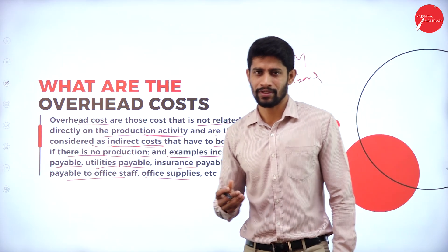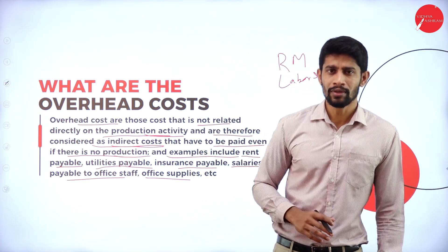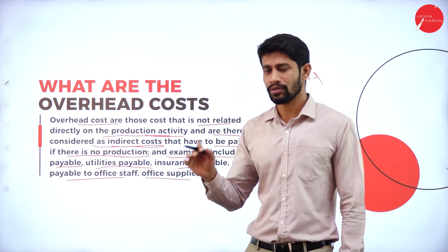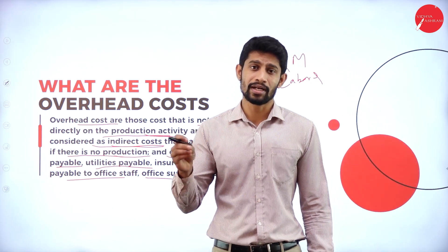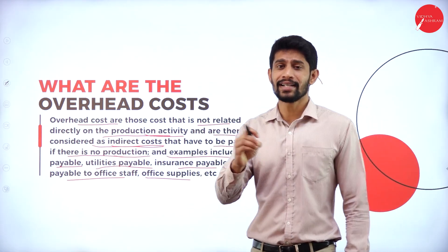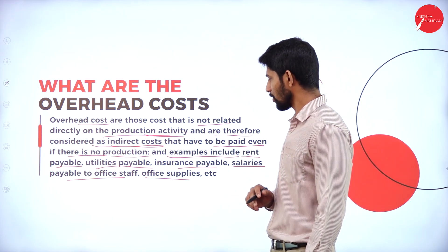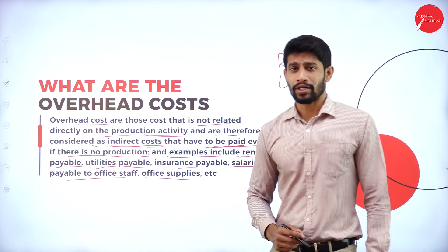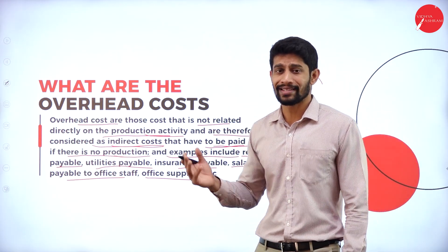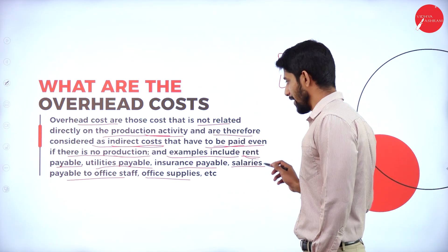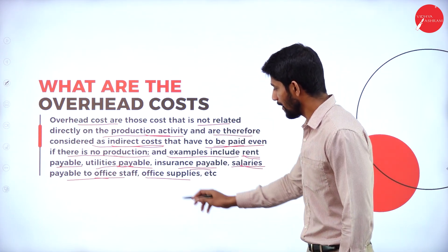Next, office supplies — for example, stationeries. Whatever stationeries you are purchasing, that will not relate to your production activity. Whether you are producing the product or not, you are supposed to pay the amount for stationeries. That is also called indirect cost. So the examples for overhead are: rent payable, utilities payable, insurance payable, salaries payable to office staff, and office supplies.